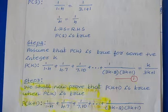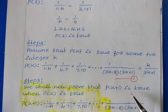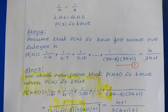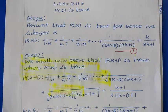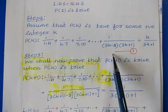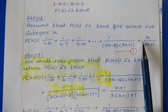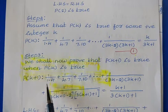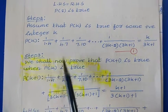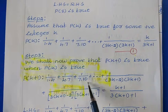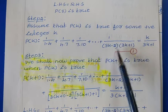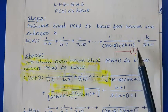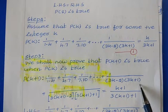Then Step 3: by using the assumption, we have to prove that the statement P(k+1) is also true. To prove that, first we will write P(k+1). The only change is that we take the P(k) statement and add the (k+1)th term to it. So P(k+1) has 1/(1×4) + 1/(4×7) + 1/(7×10) + ... + 1/((3k−2)(3k+1)) — this is the left hand side of P(k).